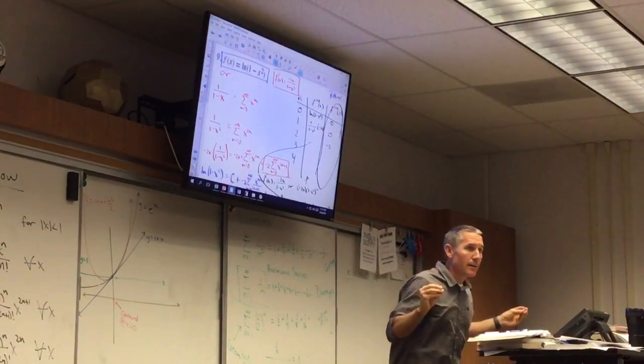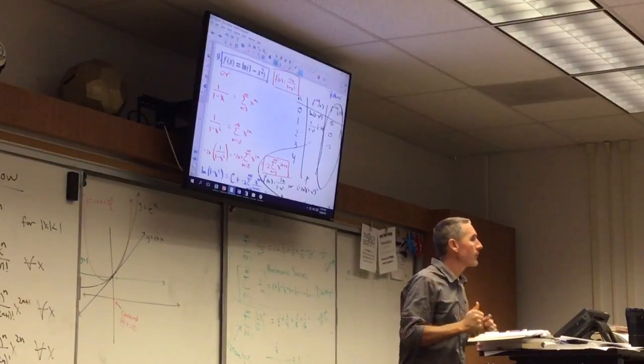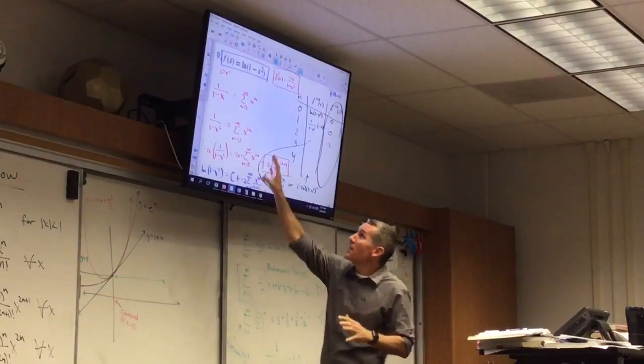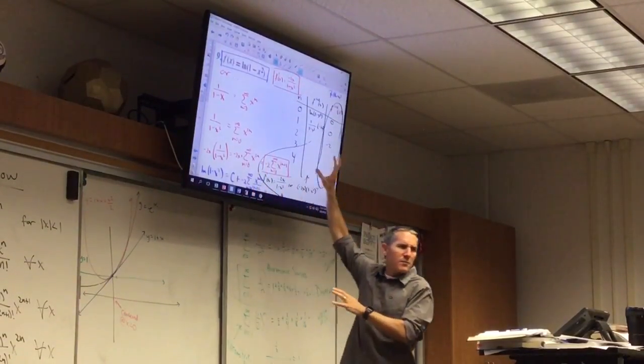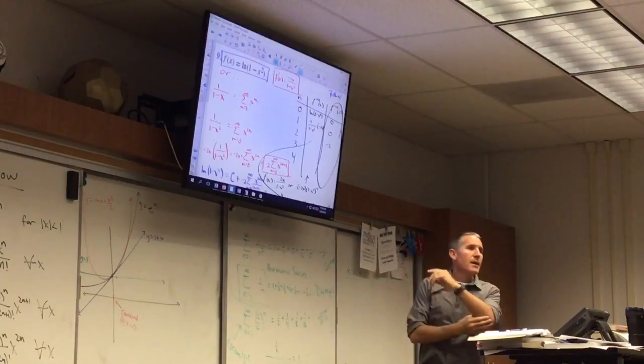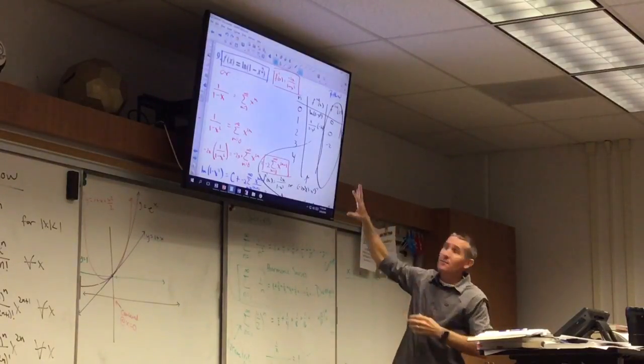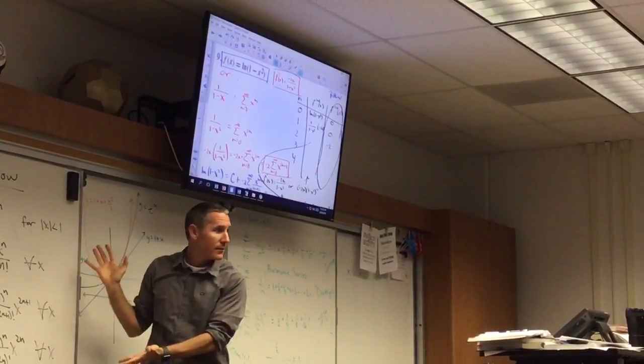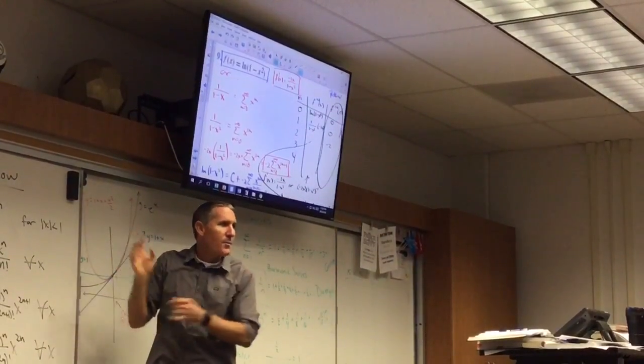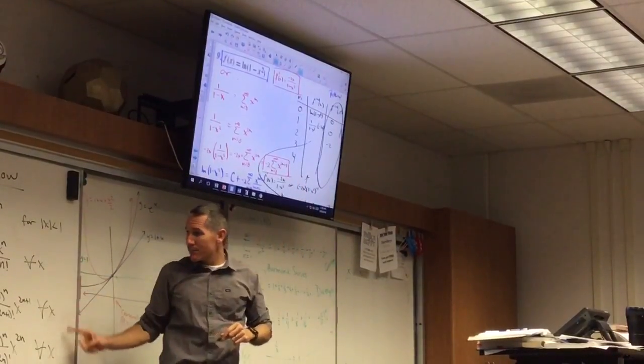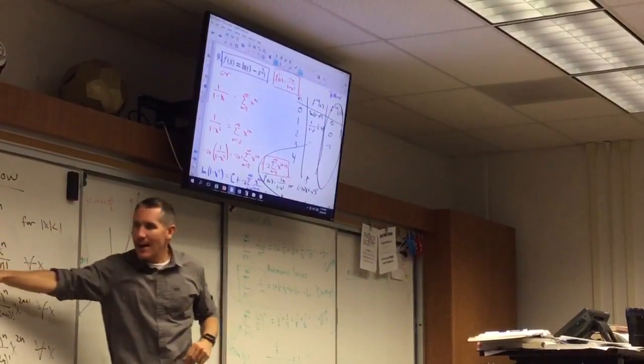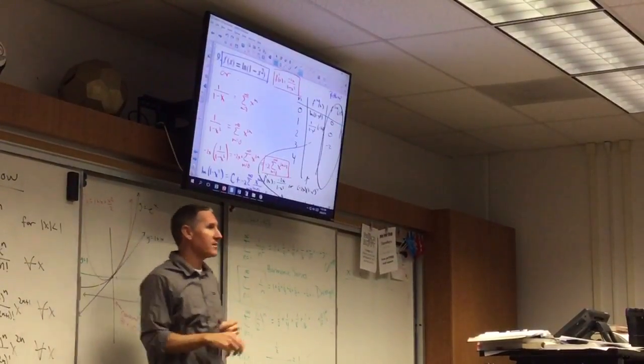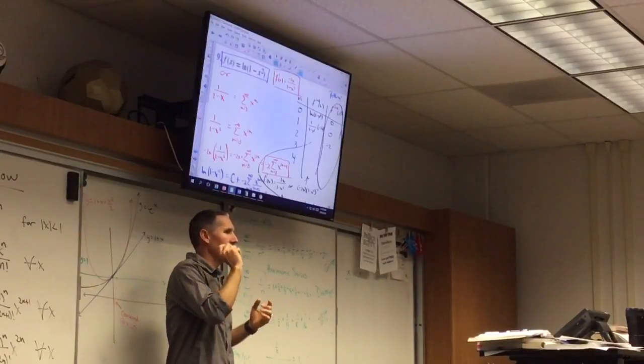So here's the thing - how do you know whether to use this method or this method over here? Typically we don't use this method other than for the ones that we have already found. So we found the patterns over there - e to the x, remember that pattern was one, one, one, one, and sine of x was just like one, zero, negative one, zero, one, zero, negative one, zero type thing.